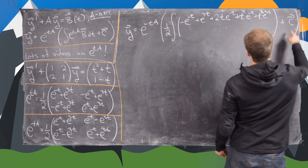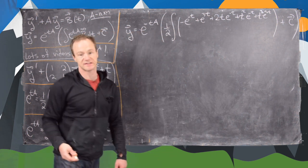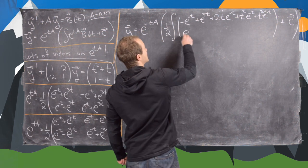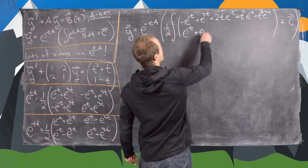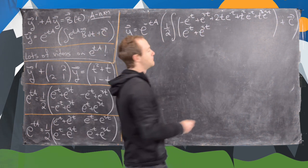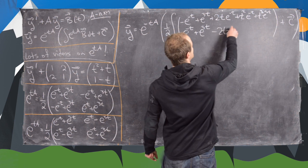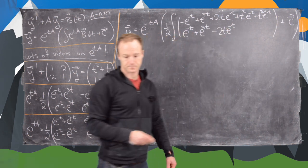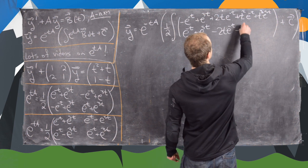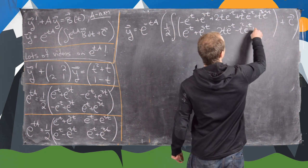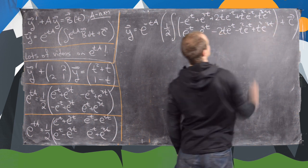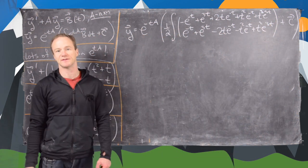Plus an arbitrary vector c. The bottom entry of that vector is: e to the minus t plus e to the 3t, minus 2t times e to the minus t, minus t squared times e to the minus t, plus t squared times e to the 3t.